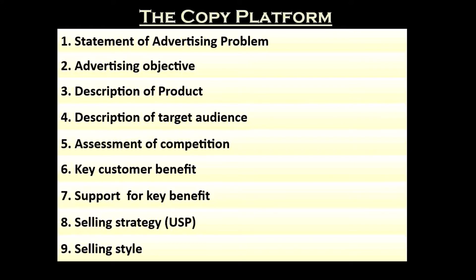Copy platform varies from ad agency to ad agency. Generally it contains the following information. One: the problem which advertising is expected to address, usually written in the form of a statement — for example, a ten percent decline in sales during the last six months. Two: the advertising objective, which is the goal that advertising is expected to achieve — for example, persuading the audience to buy the company's product so that the declining trend in sales can be stopped or reversed.